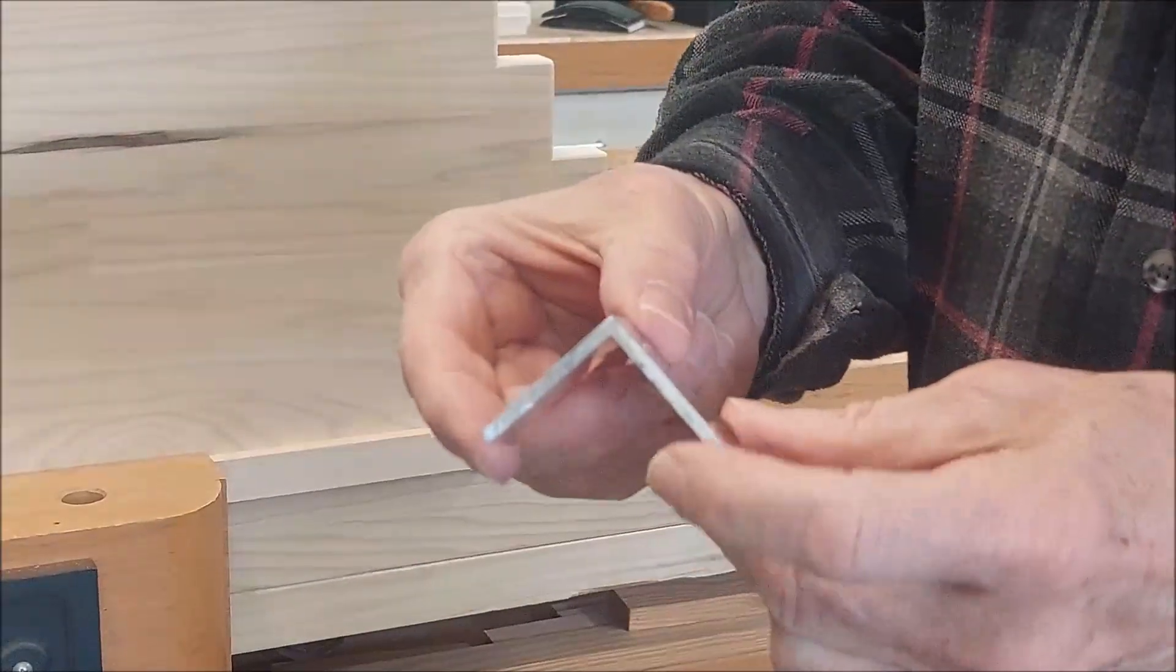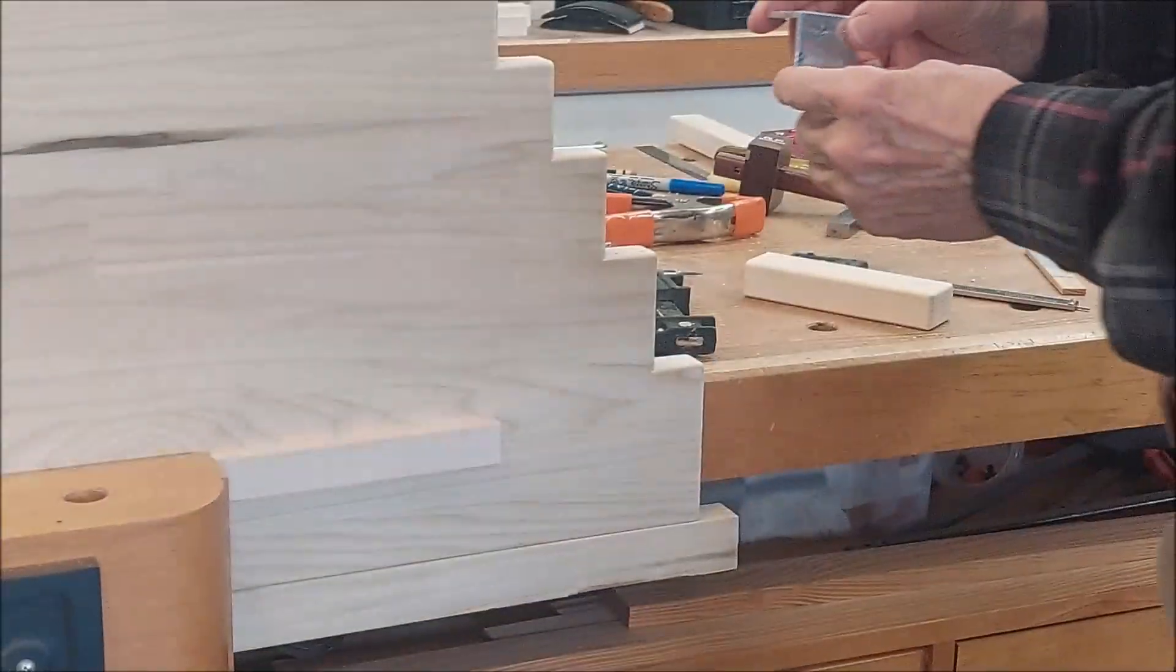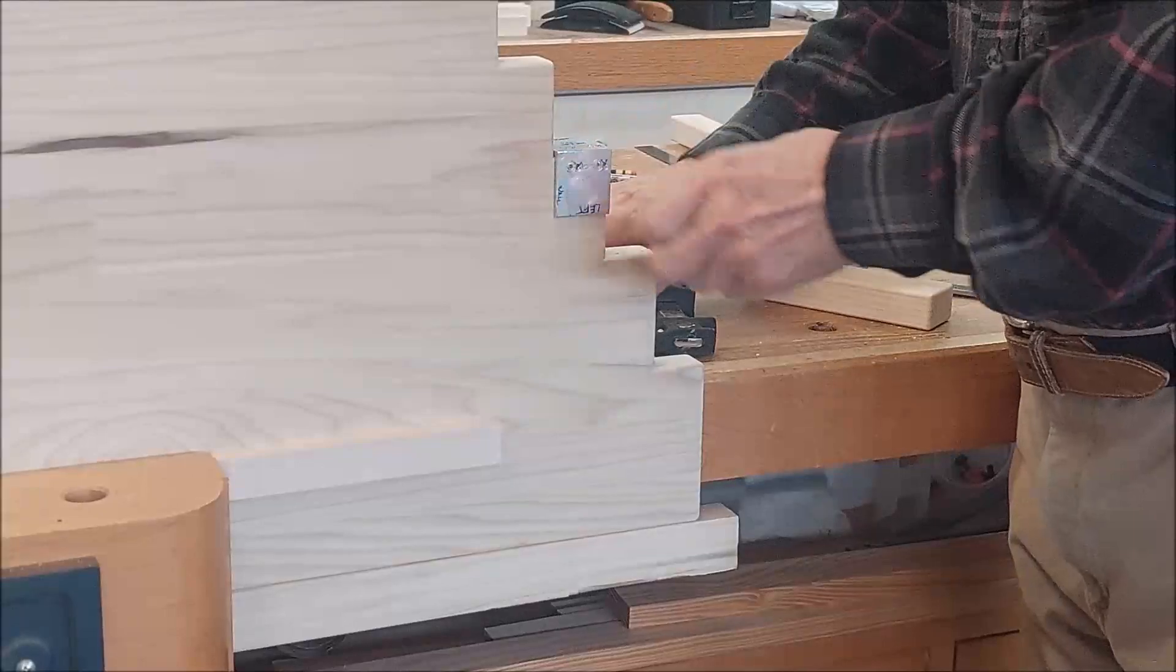This little jig was made from a piece of aluminum angle to help precisely locate the screw holes for all of the hinges.